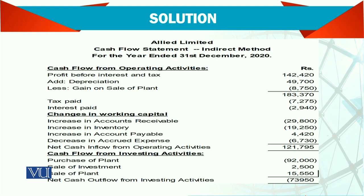The problem arises because normally the tax of this year is going to be paid next year, so there is a liability. We need to find out how much tax is paid during the year — no matter whether it is the current year or previous year, we have to identify the tax paid during the year. Then we look at the change in working capital, which is the difficult part.